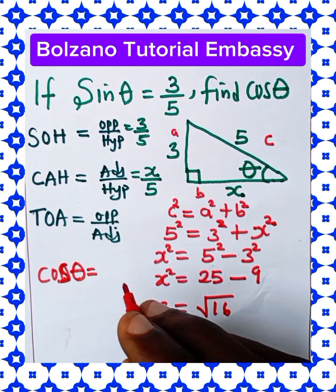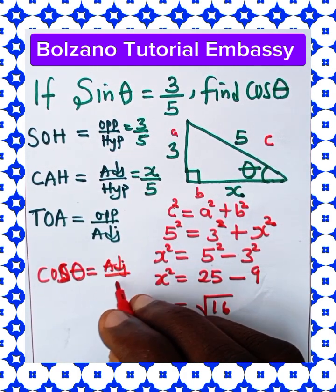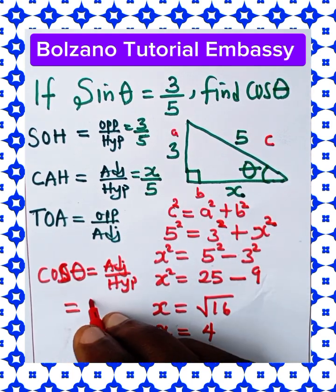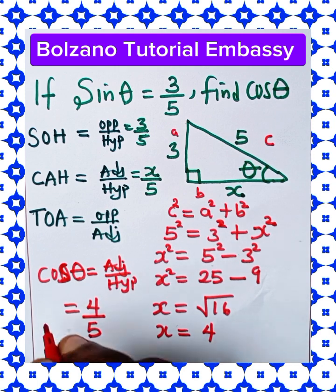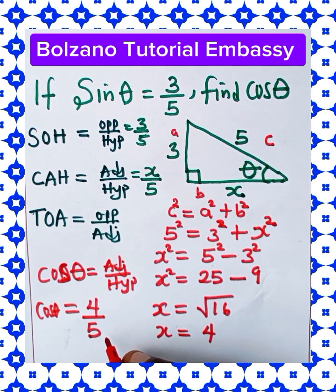Cos theta, which is defined as adjacent over hypotenuse, is now equal to 4 over 5. So our cos theta is equal to 4 over 5.